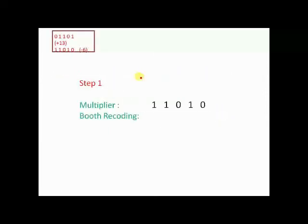Let's do the first step. We have to multiply +13 with -6; all these are in 2's complement. If you don't know how to do 2's complement, do check my video on number systems. This is my multiplier, so we will write the multiplier as 1 1 0 1 0, and then we need to do the Booth recording. In the rightmost place you write a small implied 0.